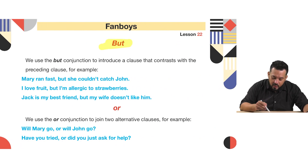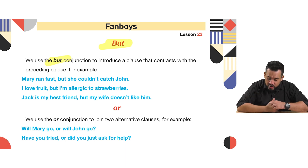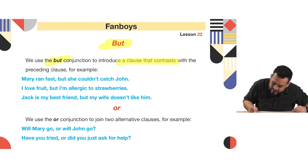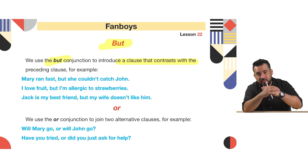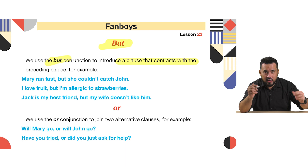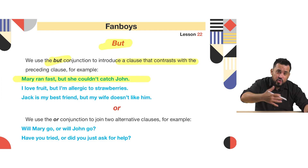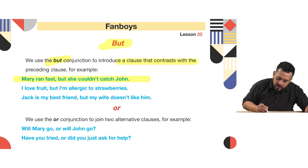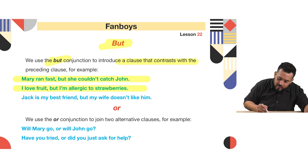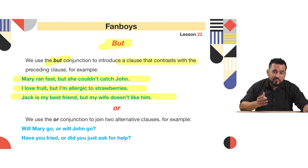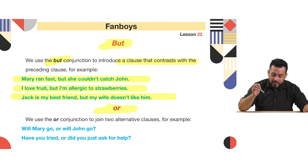The next FANBOY is 'but' — also a popular conjunction used to connect two clauses. We use it to introduce a clause that contrasts with the preceding clause. For example: 'Mary ran fast but she couldn't catch John.' 'I love fruit but I'm allergic to strawberries.' 'Jack is my best friend but my wife doesn't like him.'